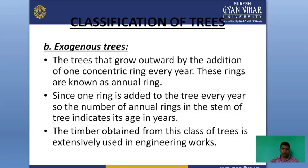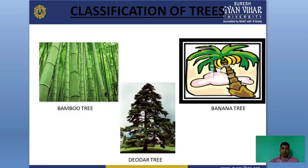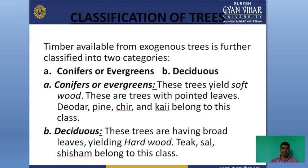Every year after one ring is formed, the number of rings tells us the tree's age. When the tree falls or is cut, we can determine its age from the number of rings. This is found only in exogenous trees. Examples: endogenous includes bamboo and banana; exogenous includes deodar, which we can use in construction. One grows inward, the other outward.